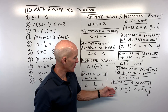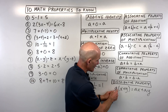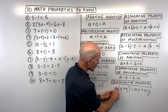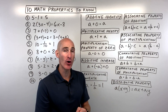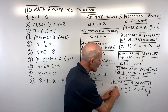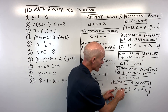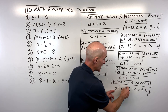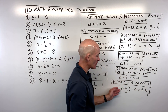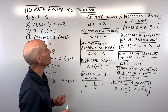The distributive property: whatever is on the outside of the parentheses, right next to them, means multiplication. You multiply that outside quantity into the parentheses. So a times the quantity (x plus y) equals a times x plus a times y — you're just distributing or multiplying into the parentheses.